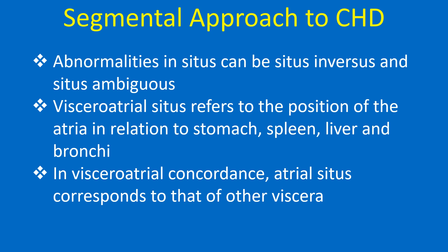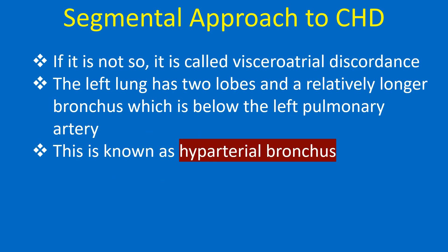Abnormalities in situs can be situs inversus and situs ambiguous. Viscero-atrial situs refers to the position of the atria in relation to stomach, spleen, liver and bronchi. In viscero-atrial concordance, atrial situs corresponds to that of other viscera. If it is not so, it is called viscero-atrial discordance.